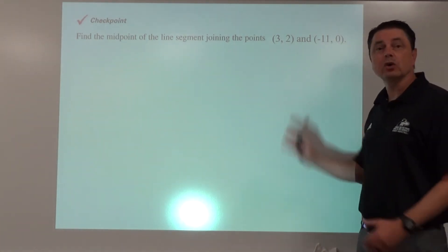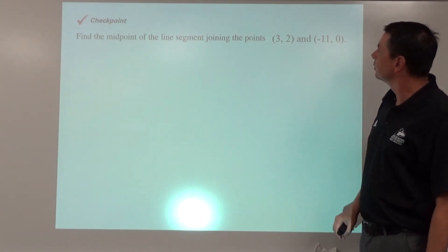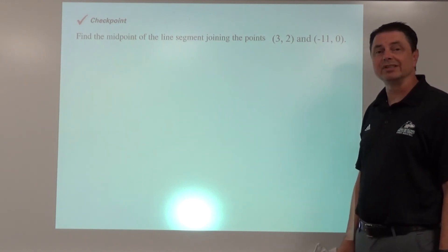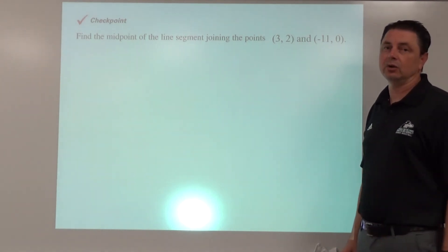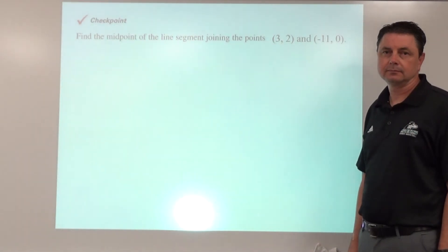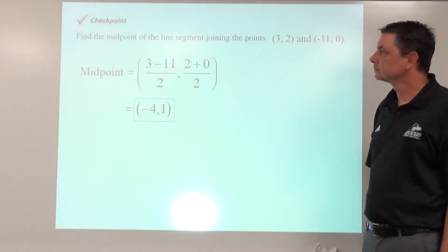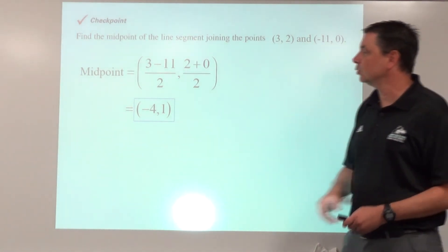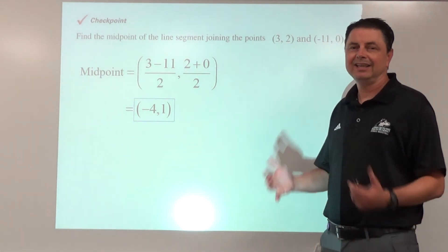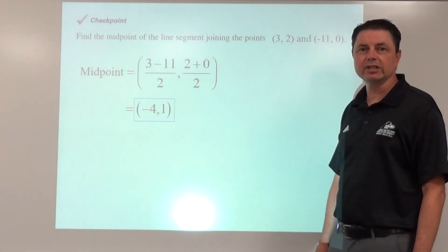Another checkpoint: go ahead and find the midpoint of the segment that connects 3 comma 2 and negative 11 comma 0. Pause the video here and work it out. What you should have gotten is the midpoint negative 4 comma 1, or equivalently negative 4 comma 0.5. That's it for today.